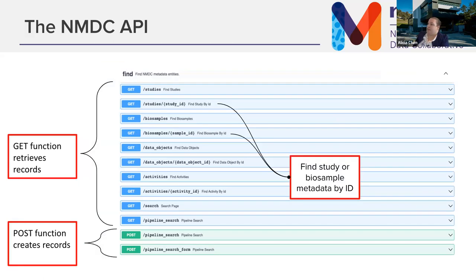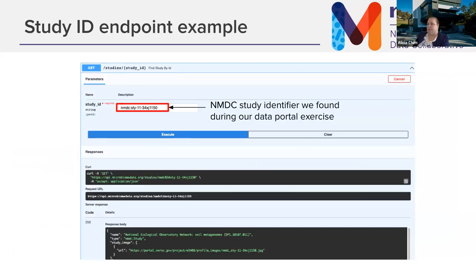Some endpoints we might be interested in are for studies and biosamples. Two endpoints just take an identifier, and two require more knowledge about how you might want to query them. Here's one study endpoint — we can take the study ID from the data portal exercise, put it in, click 'try it out,' enter the study ID, click execute, and it returns a JSON document. You can download that or use curl, Python requests library, R, or whatever you prefer.